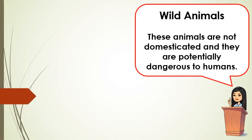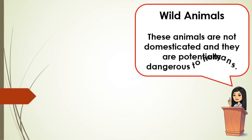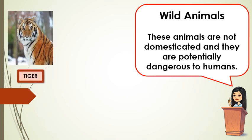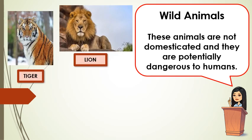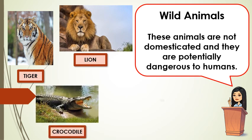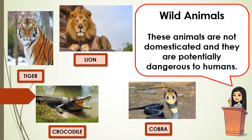Next, we also have the wild animals. These animals are not domesticated and they are potentially dangerous to humans — just like the tiger, lion, crocodile, and cobra. Can you name other wild animals? Wild animals usually live in the forest.